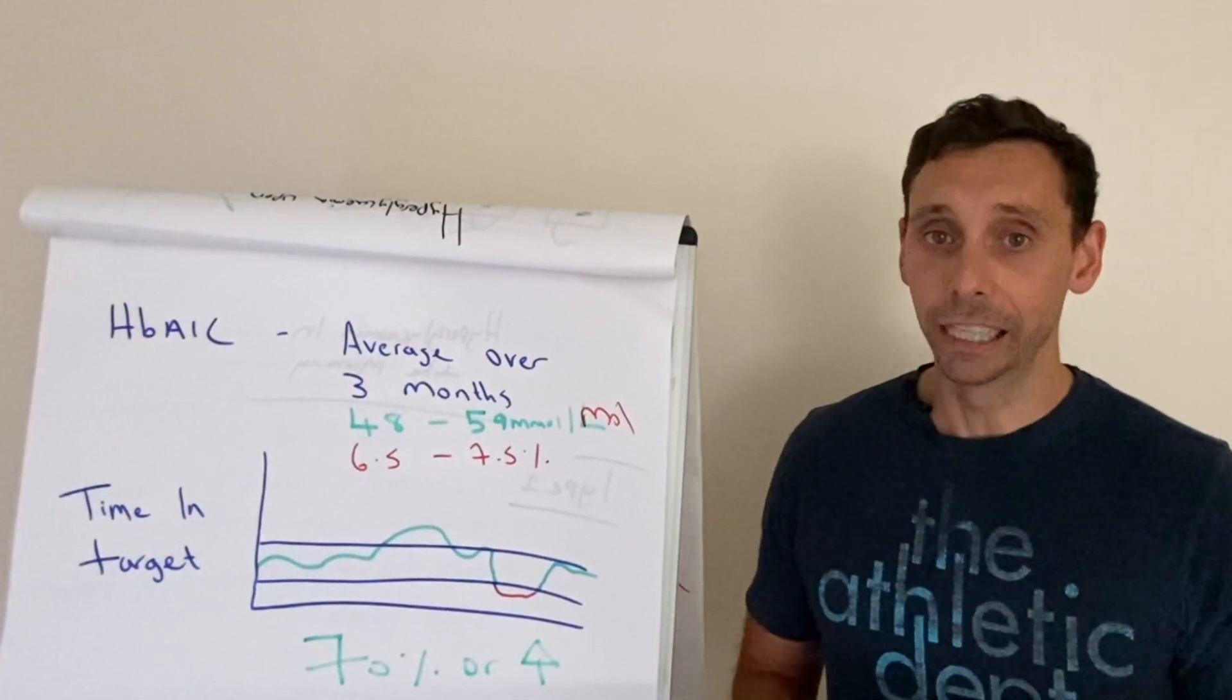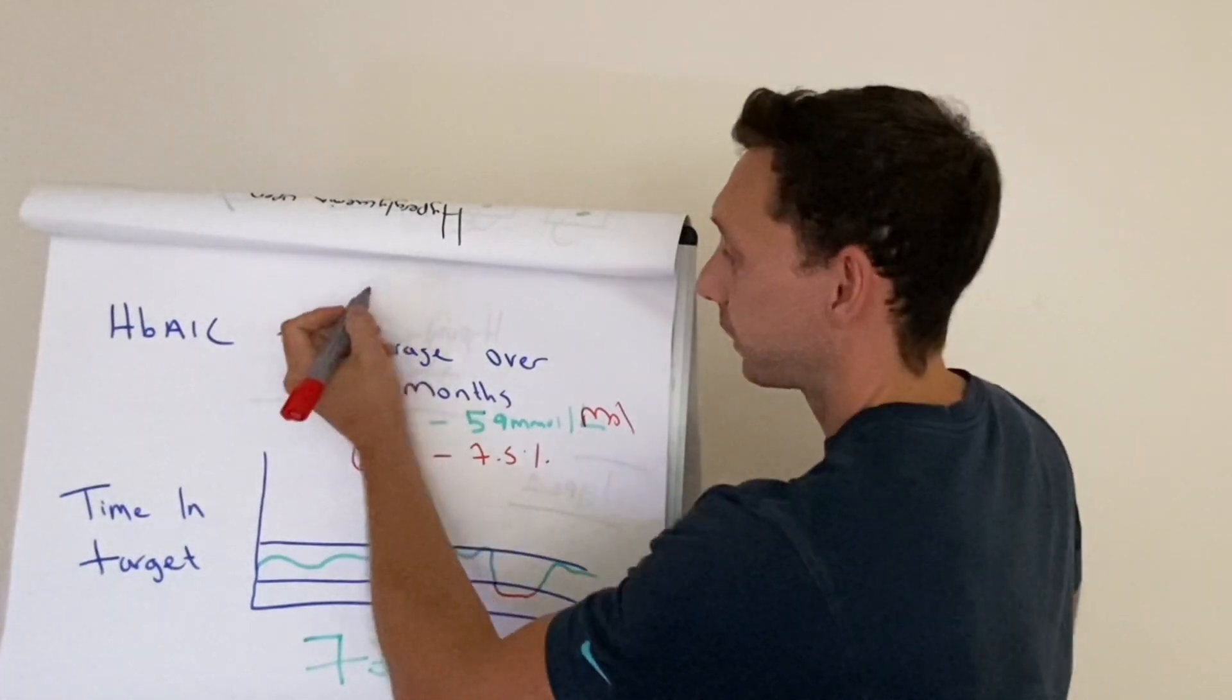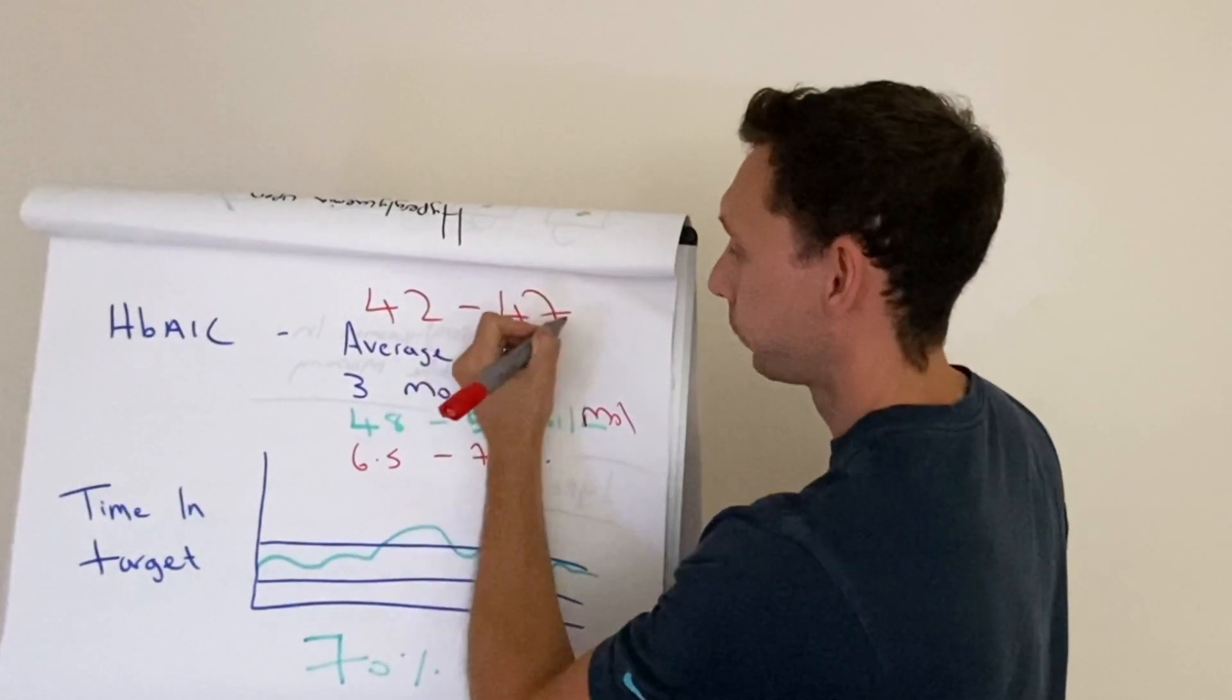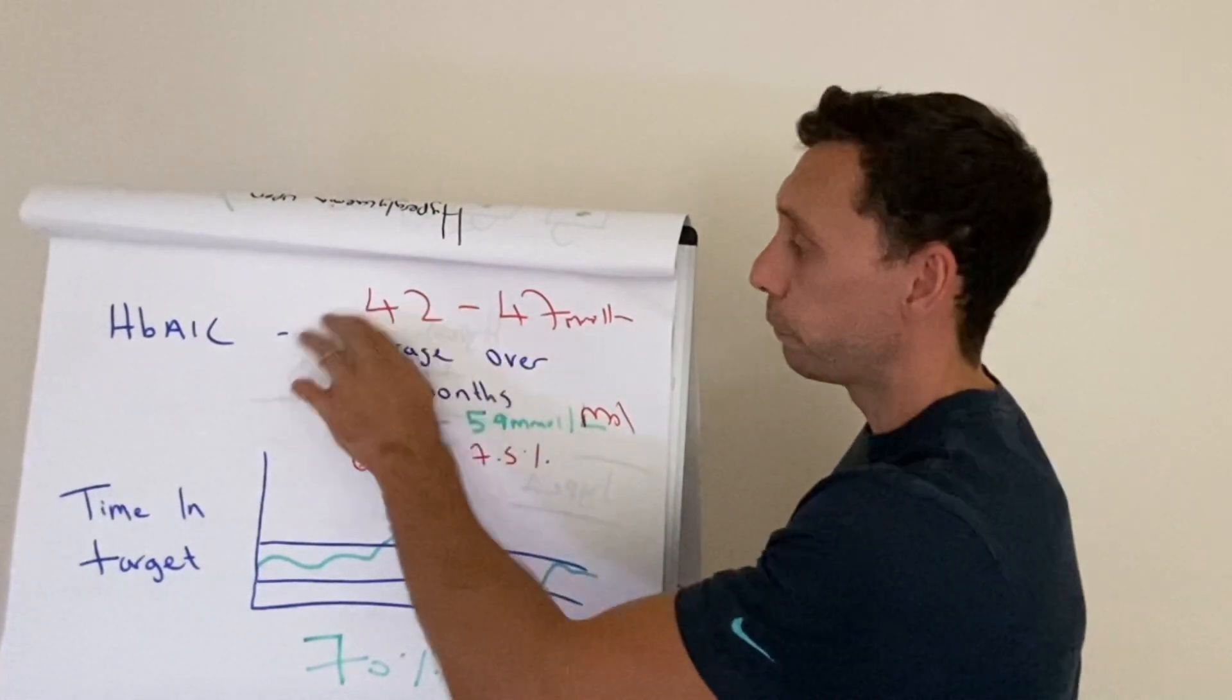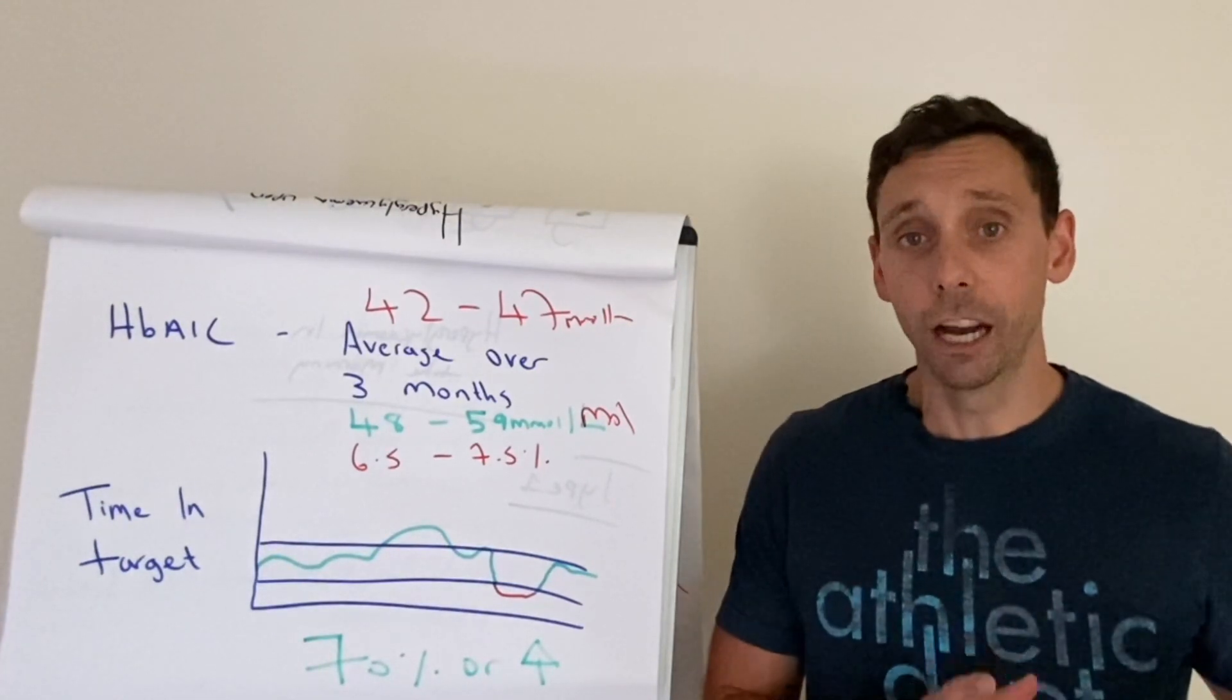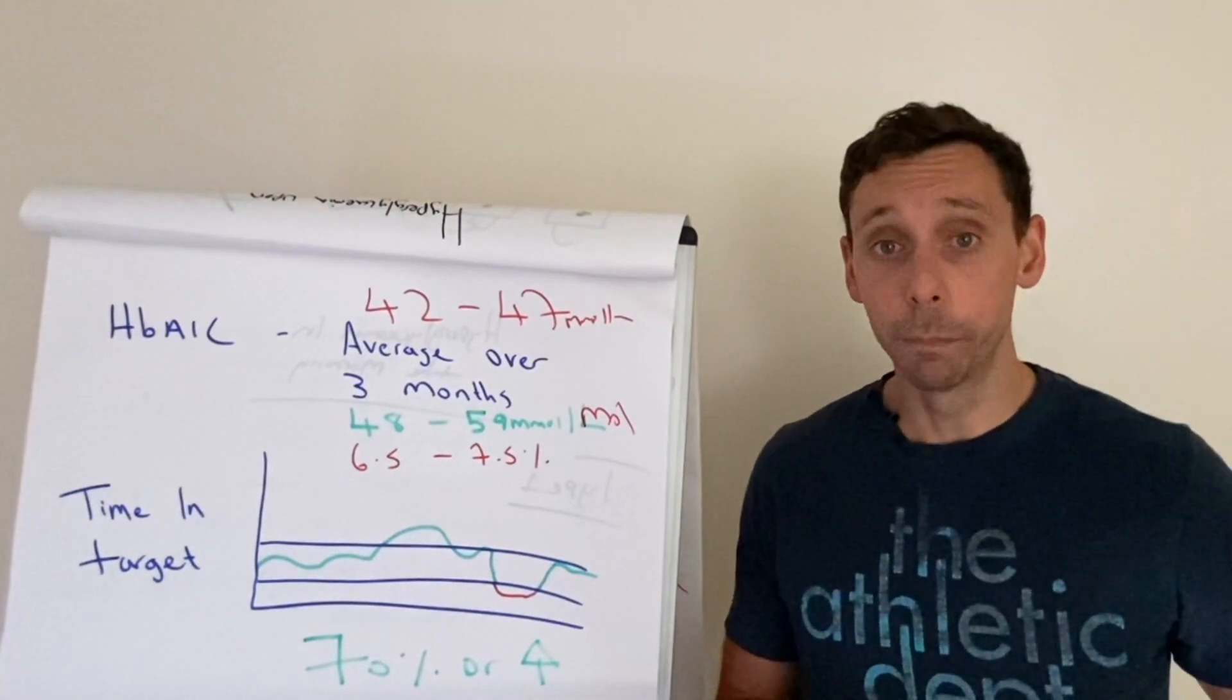But yes, absolutely, you can get below these values. In fact, there is another value, if you're running between 42 and 47 millimoles per mole, that is what we consider pre-diabetes. So anything below 42, technically, you're no longer in the diabetes reference ranges. Now, if you do that without taking any medications, then that's when you're technically in diabetes remission.